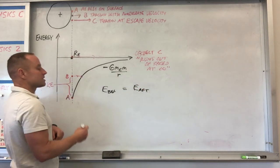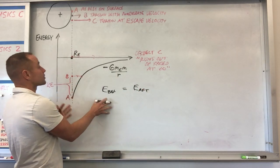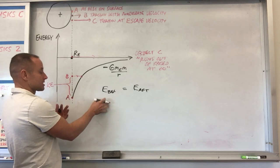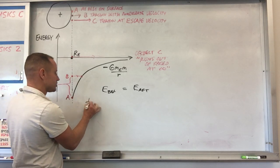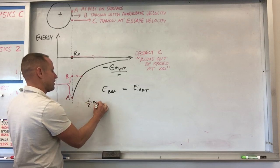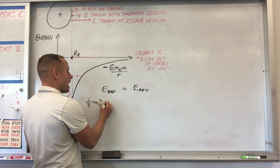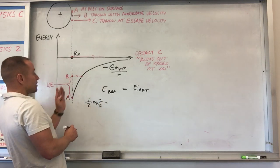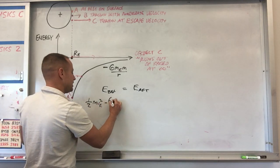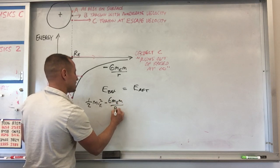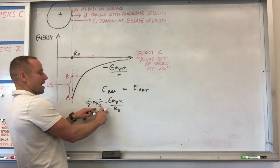So we'll say E before is E after. Well, for the before state, let's be on the Earth's surface at escape velocity. So it's got two types of energy. It's got a whole lot of kinetic energy because you just threw it at escape velocity, 1/2 m v_escape squared. And then it's got the gravitational potential energy at the Earth's surface, so minus GMₑm over the radius of the Earth. So it's got that at the beginning.